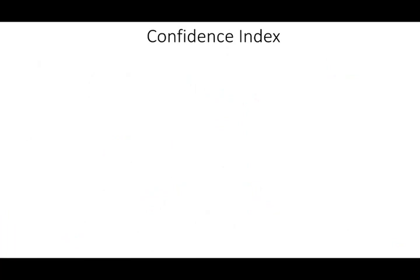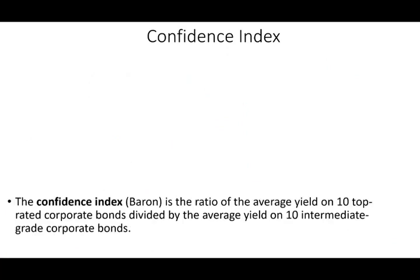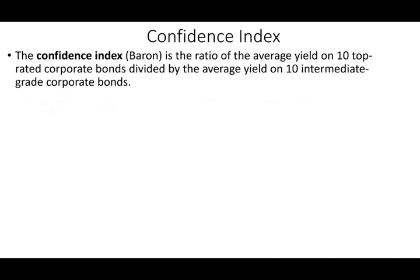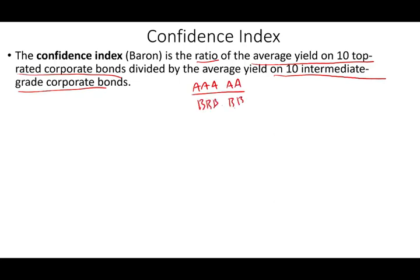The second indicator is the confidence index, also known as the Barron's confidence index. It's a ratio: the average yield on the top-rated corporate bonds divided by the average yield on 10 intermediate-grade corporate bonds. In the numerator you have the excellent bonds — triple-A and double-A — and in the denominator you have the triple-B and double-B intermediate bonds.